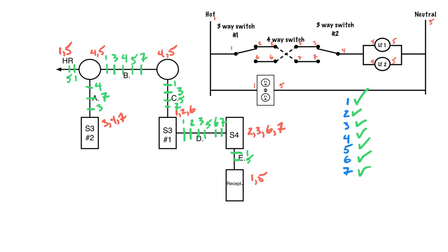Now I can count these up. From the home run I've got two wires. Between the two lights I've got five wires. Between the light and three-way switch number two I've got three wires. Between the light and three-way switch number one I've got four wires. Between three-way switch number one and the four-way switch I've got six wires. Down to the receptacle I have two wires. That covers the entire circuit. It shows how important it is to draw your schematic, number it, transfer those numbers to the physical layout, and then connect the dots.